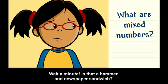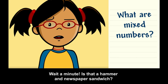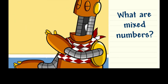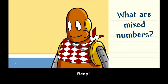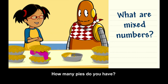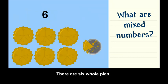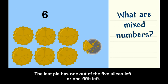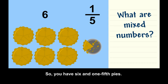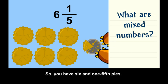Wait a minute. Is that a hammer and newspaper sandwich? How many pies do you have? There are six whole pies. The last pie has one out of five slices left, or one-fifth left. So you have six and one-fifth pies.